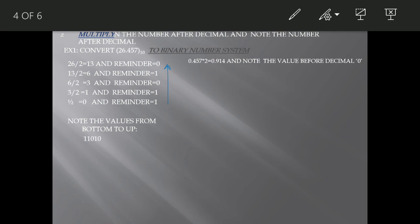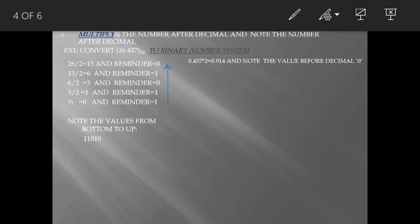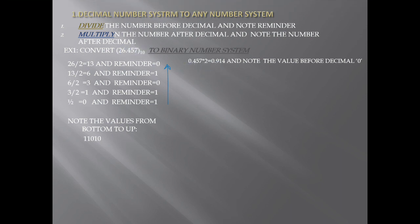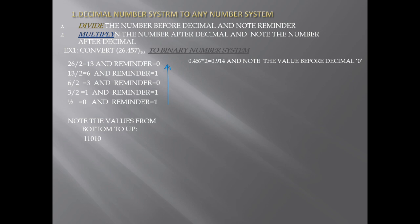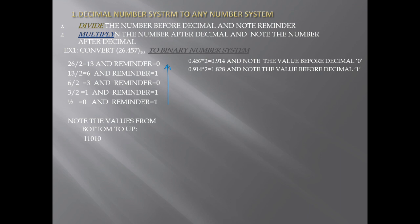Next, for the fractional part 0.457: multiply 0.457 by 2 and we get 0.914. Note the digit before the decimal, which is 0. Next, multiply 0.914 by 2 and we get 1.828. Note the digit before the decimal, which is 1.